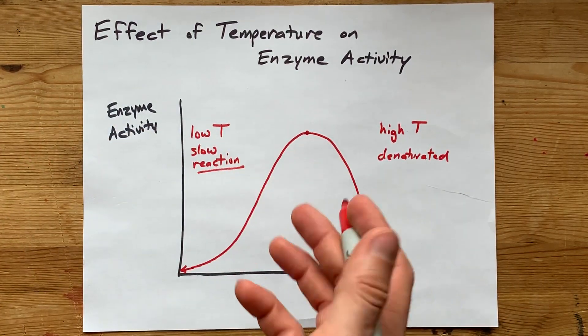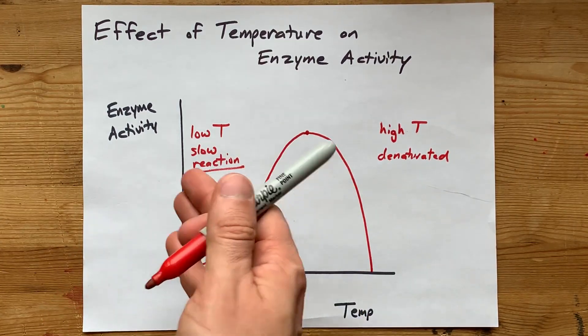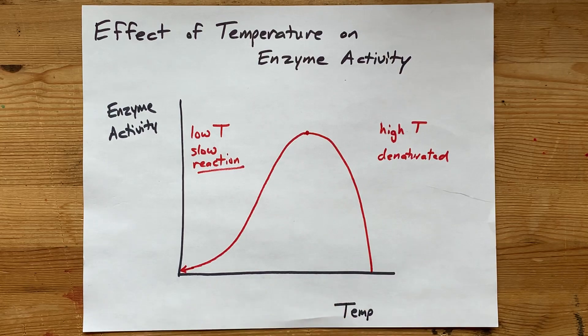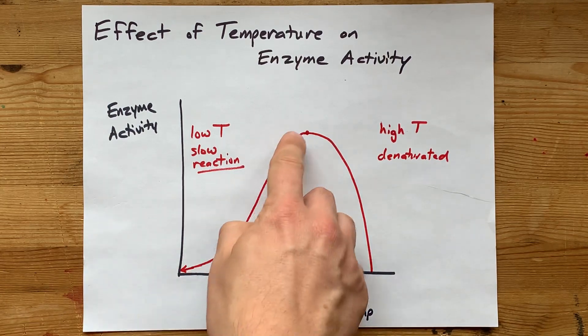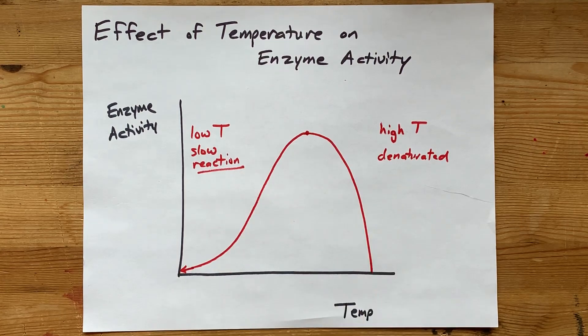But if that doesn't happen, then technically there's a small chance that the molecules will have enough energy to react. And thus, I don't want this to hit zero if you can help it when you're drawing this curve, okay?